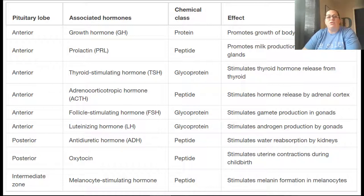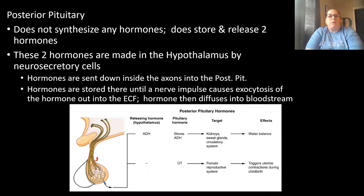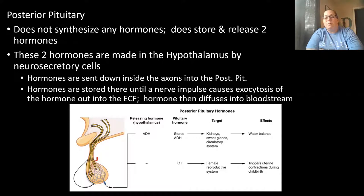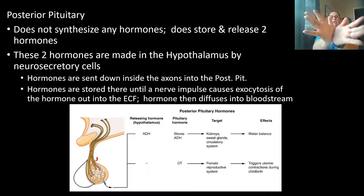The posterior pituitary does not synthesize hormones. The two hormones it stores — oxytocin and ADH — are produced by neurosecretory cells in the hypothalamus and sent via axons to the posterior pituitary for storage. When a nerve impulse tells them to be released, they exit through exocytosis — inside a vesicle that fuses with the plasma membrane and releases its contents — then diffuse into the bloodstream to reach their target tissue.